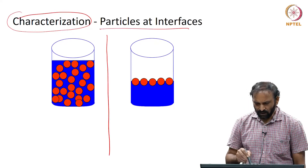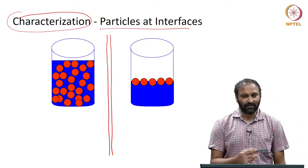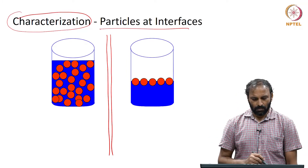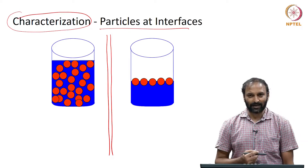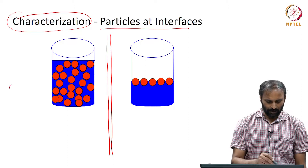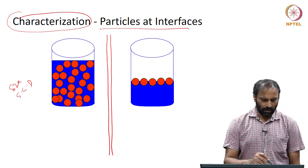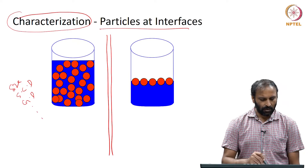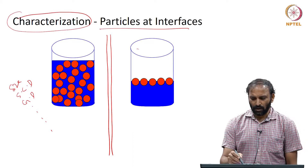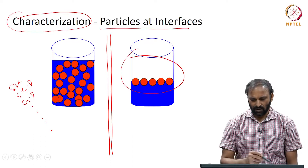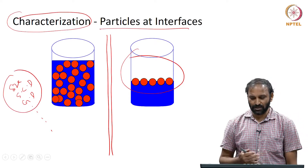If you look at the bulk, we have talked about several techniques and several parameters one needs to characterize the particles — for example, size, surface charge density, grafting density, and several other parameters. When it comes to particles at interfaces, the characterization of all these parameters is also equally important.